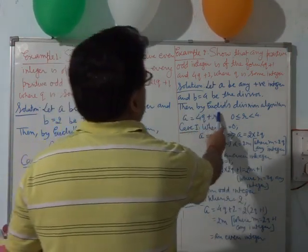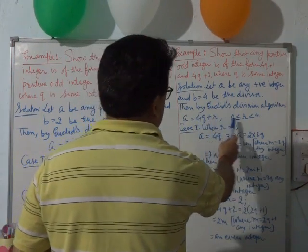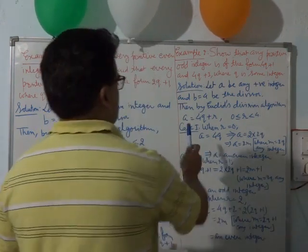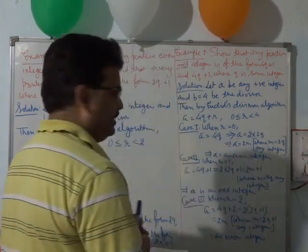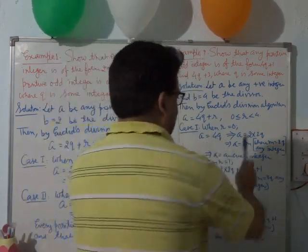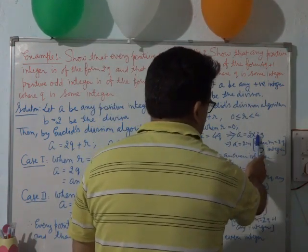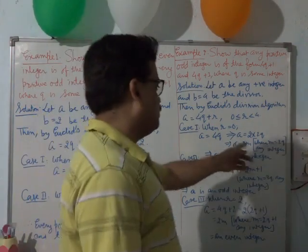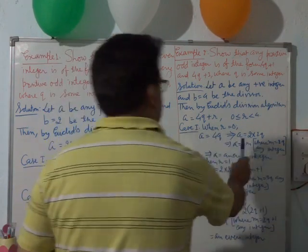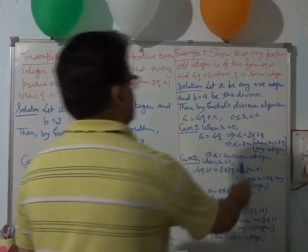Applying Euclid's division algorithm, A will be equal to 4q plus R, where R ranges from 0 to 3 — R cannot equal the divisor. In case 1, when R equal to 0, A will be equal to 4q. This 4q can be written as 2 into 2q, which can be written as 2m. Since 2 and q are integers, by the closure property, 2q is also an integer. So A is of the form 2m — a multiple of 2 and hence an even integer.